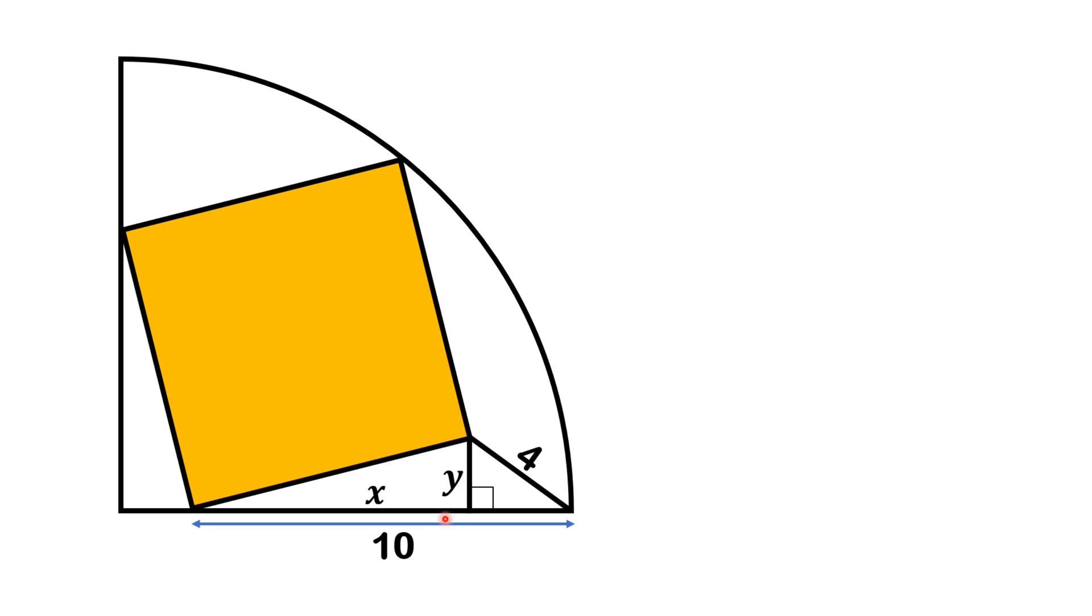Then, as this whole length is 10 and this length is x, this length is equal to 10 minus x. We can write it, this is x and this is 10 minus x. Moreover, let's call the side length of square s.